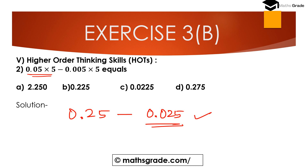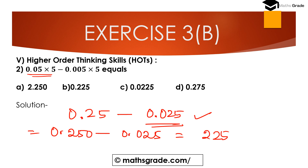Now compute 0.25 minus 0.025. Writing as 0.250 minus 0.025: 10 minus 5 is 5, 4 minus 2 is 2 (with borrowing), and 2 minus 0 is 2 — giving 0.225. So option B — 0.225 — is the correct option. Therefore, 0.05 × 5 minus 0.005 × 5 equals 0.225.